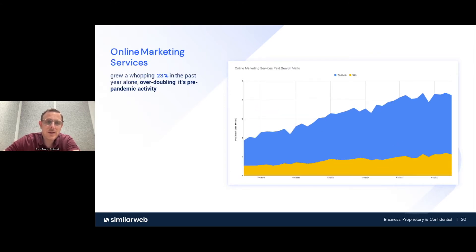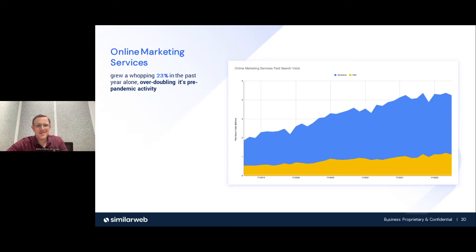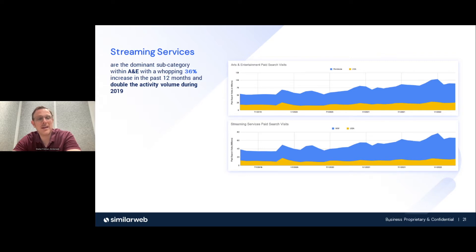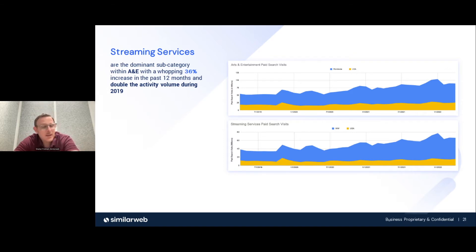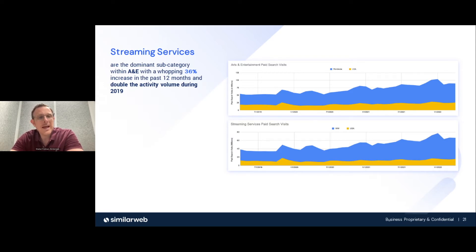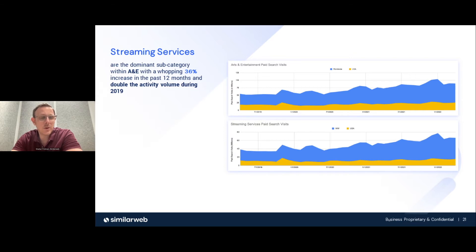Many of those government assistance plans have been canceled or have much stricter rules now, and people need to go back to their jobs — we're seeing that recovery in the job industry. Online marketing grew 23% in the past year alone, more than doubling pre-pandemic numbers, so there's a strong signal to look for jobs in online marketing. A lot of brick-and-mortar stores knew they couldn't survive without selling online, and Shopify is one of the top keywords with heavy bidding — that big shift to online e-commerce also drives online marketing growth.